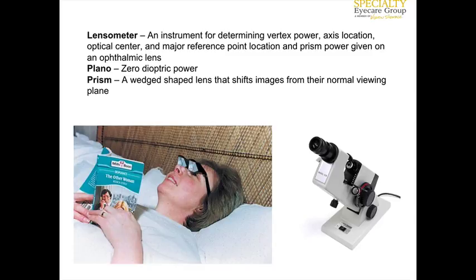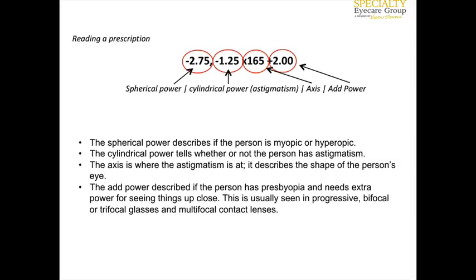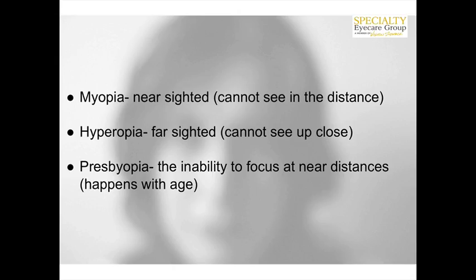If something is indicated as plano power, it means it's zero. Prism is a wedge-shaped lens that shifts the image from the normal viewing plane — for example, allowing a person to look straight ahead while the prism shifts the image so they can see something at a different angle. Reading a prescription: the first number is the spherical, then the cylinder, then the axis, indicating astigmatism power and location, followed by the ADD power. The spherical describes whether a person is myopic or hyperopic, the cylinder tells us if they have astigmatism, the axis shows where the astigmatism is located, and the ADD describes the amount of presbyopic correction.